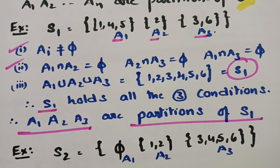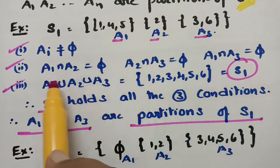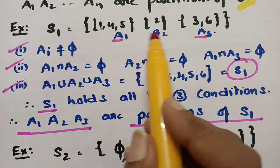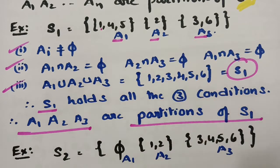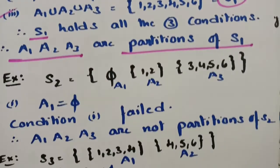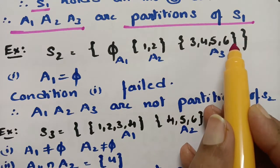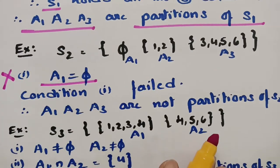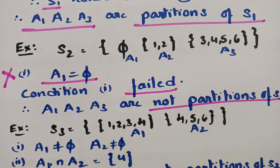If all three properties hold — none of the subsets is empty, any two sets are disjoint, and the union equals S — then A1, A2, A3 are the partitions of S. Coming to S2: here A1 is an empty set, so the first condition fails. Therefore A1, A2, A3 are not the partitions of S2.